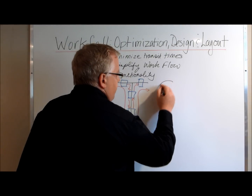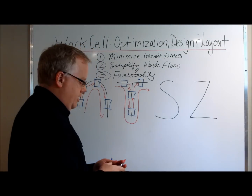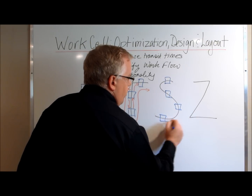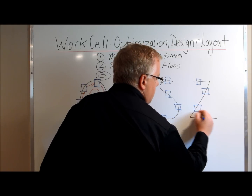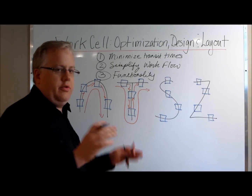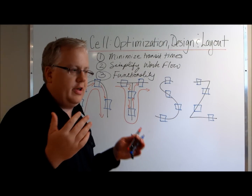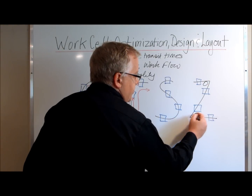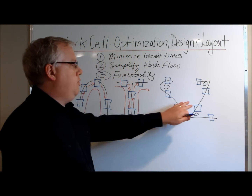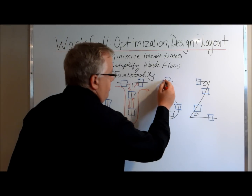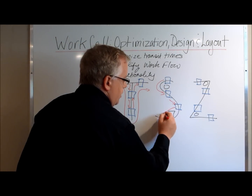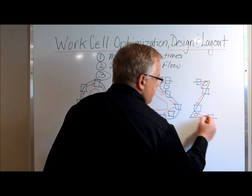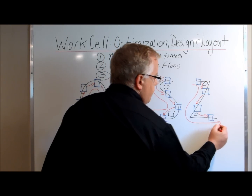The other two layouts are commonly referred to as the S-layout and the Z-layout, with workstations one through four arranged accordingly. These two layouts allow you to work around obstructions such as pillars or CNC machines — for example, a pillar here and a pillar there, or a CNC machine here. Both layouts let you route around those obstructions while minimizing transit times and keeping work flowing freely through the entire work cell.